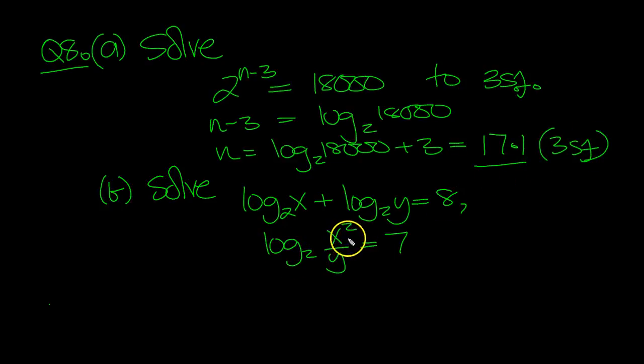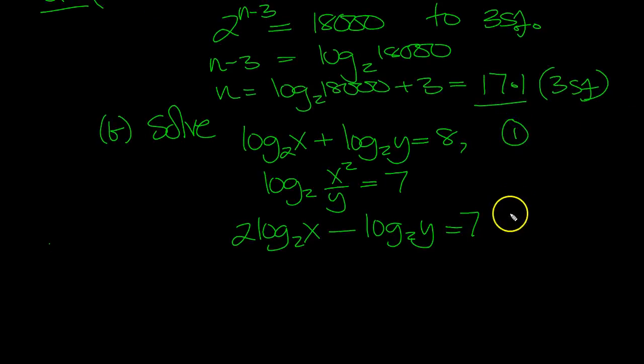OK, this one, this second equation is 2 log 2x minus log 2y, equals 7. So this is number 1, this is number 2.